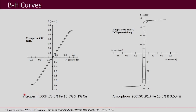This material Vitroperm 500F has the composition 73.5% iron, 15.5% silicon, and 1% copper. The BH curve obtained is shown here — the H-axis is expressed in Oersteds, which is the CGS unit of magnetic field intensity H. For amorphous 2605SE, another magnetic material, the BH curve looks very different — the residual flux is much higher although the coercivity is lesser. Whereas for Vitroperm, both residual flux and coercivity are very small.